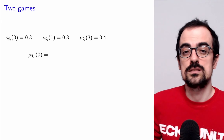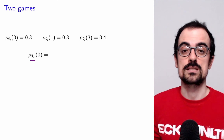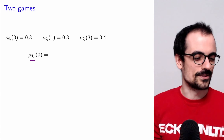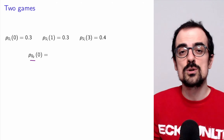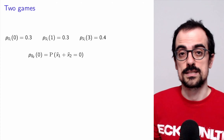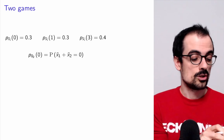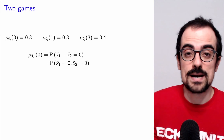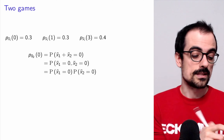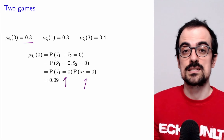Let's begin by considering just two games. We have the sum S2, which is X1 plus X2, and I want to characterize its probability mass function. I recommend you stop the video and try to derive this yourself. What is the PMF of S2 at 0? It's the probability that S2 equals 0. How can X1 plus X2 equal 0? Only if X1 is 0 and X2 is also 0. By independence, that's just the product of the individual probabilities — 0.3 times 0.3 — so P(S2=0) = 0.09.